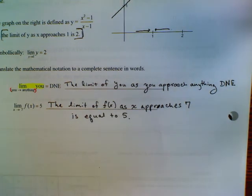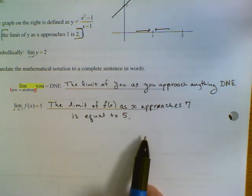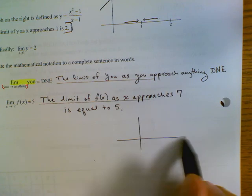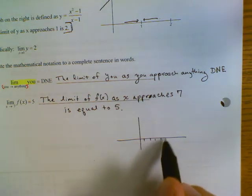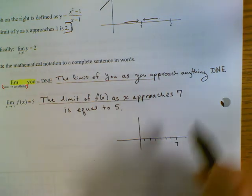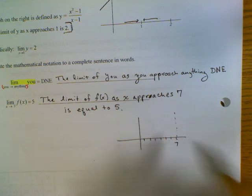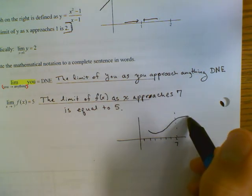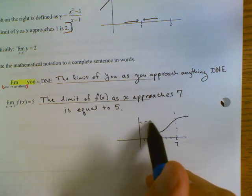So we're just saying that the function value is getting closer and closer to 5. So if I were to draw something like that, maybe I would have 7 tick marks. So there's my x equals 7 mark. And a sketch might look like this. And there's my 5.